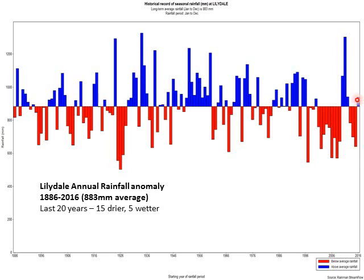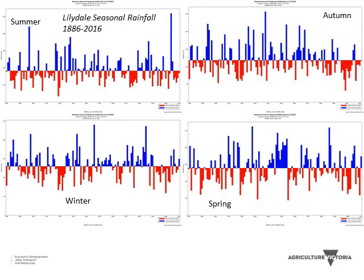Here's a long-term rainfall record from Lilydale back to 1886, all the way through to last year. You can see a lot of variability — some years barely 600 mm of rainfall and some years over 1200 mm. In the last 20 years we've had 15 dry and five wetter than average, and last year is one of those wetter years. Looking at the seasonal breakdown, there are probably a few drier autumns and drier winters thrown in there compared to long-term average.